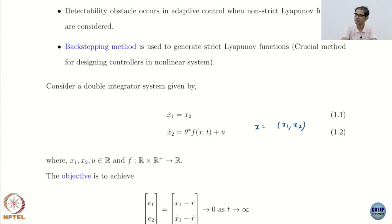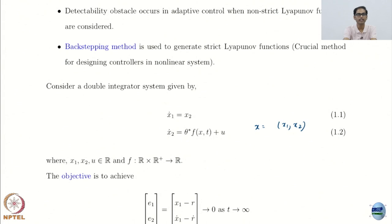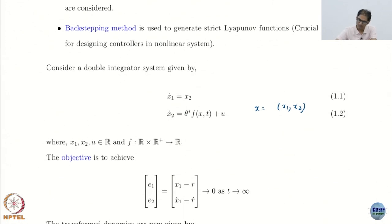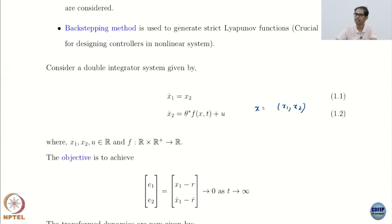We just saw a spring-mass-damper example where, even though we know the system is asymptotically stable, the V we chose did not have a negative definite V dot. Those are not strict Lyapunov functions, and they give trouble in adaptive control — they are not nice for adaptive control. This is why backstepping is so popular: adaptive control requires CLFs or strict Lyapunov functions.